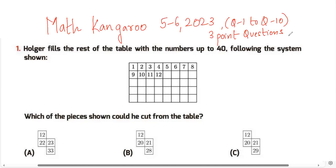Question 1: Holger fills the rest of the table with the numbers up to 40, following the system as shown. Which of the following pieces would he cut from the table? There are eight numbers here and five squares, going up to 40 — so it's like a table of 8. This gives us 16, then 24, then 32, and then 40.